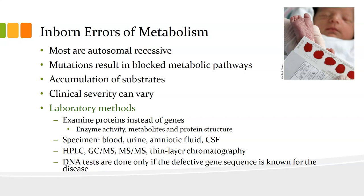The lab methods examine the proteins instead of the genes — we look at enzyme activity, the metabolites, and the protein structure. Specimens that can be used are blood, urine, amniotic fluid, and spinal fluid. The methods are high-performance chromatography, gas chromatography, mass spectrometry, tandem mass spectrometry, and thin layer chromatography. DNA tests are only done if the defective gene sequence is known for that disease.